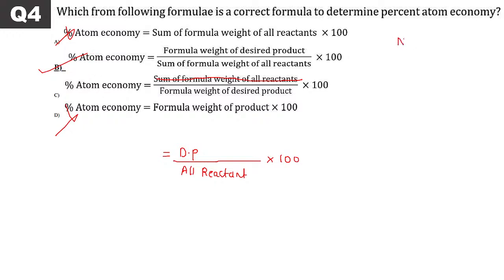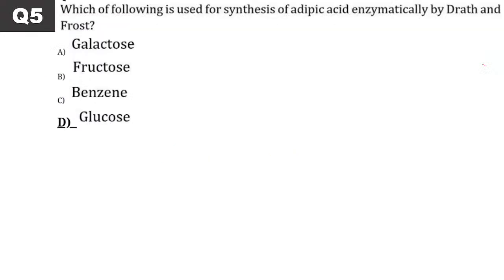In level 1 and level 2, there are about 3 numerical problems on atom economy. One is based on salicylic acid. A formula-based question — check if you've solved those numericals. The approach to numericals on atom economy should be known.